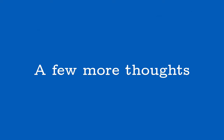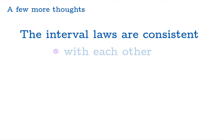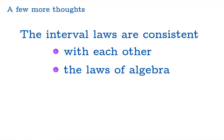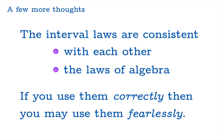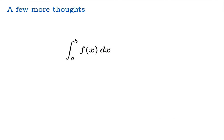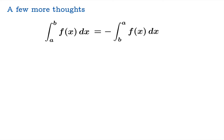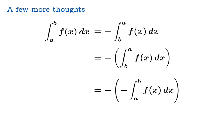Here are a few more thoughts about these interval combination laws. The interval laws are consistent both with each other and the laws of algebra — if you use them correctly, you may use them fearlessly. For example, the limit swap law tells us the integral from A to B is the opposite of the integral from B to A. If you apply the swap law again, the integral from B to A is itself the opposite of the integral from A to B, and negative 1 times negative 1 is 1. So those two applications cancel each other out and you're back to where you belong. Use the limit swap law as often as you wish and you won't run into a logical contradiction.